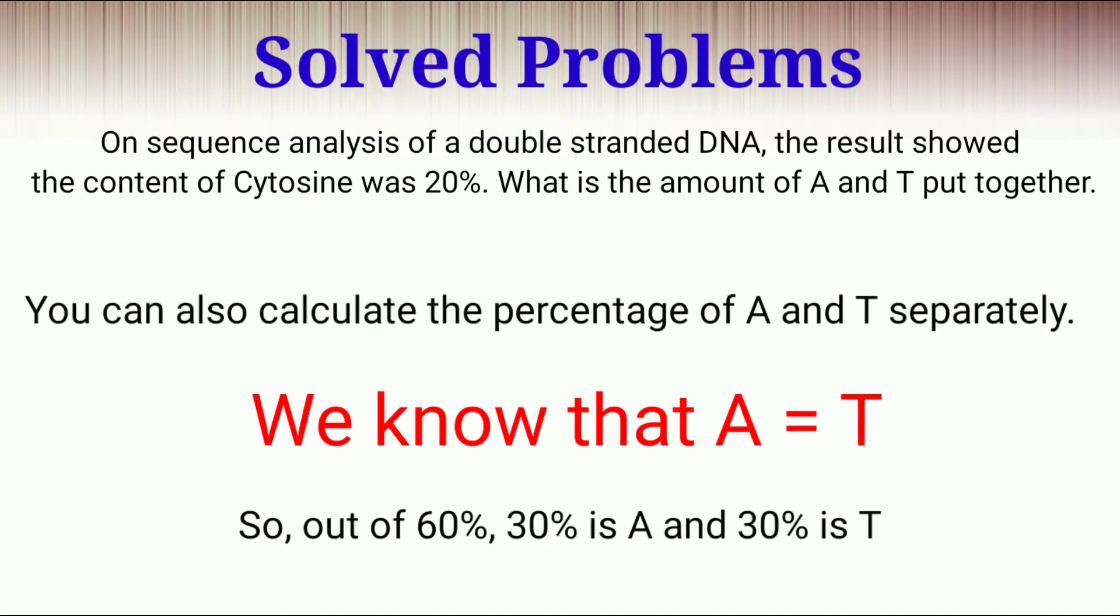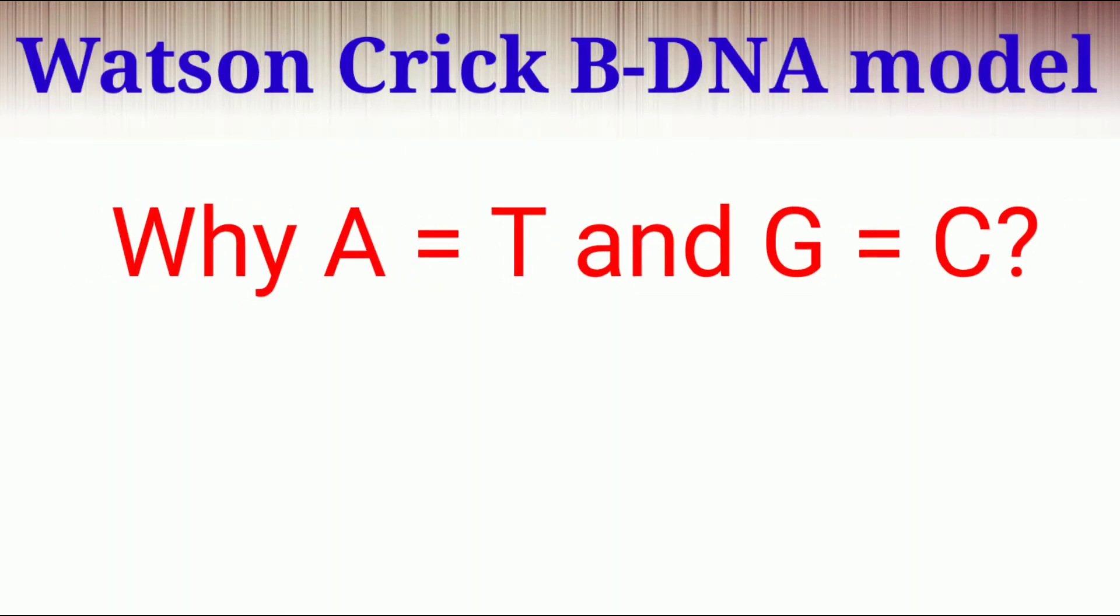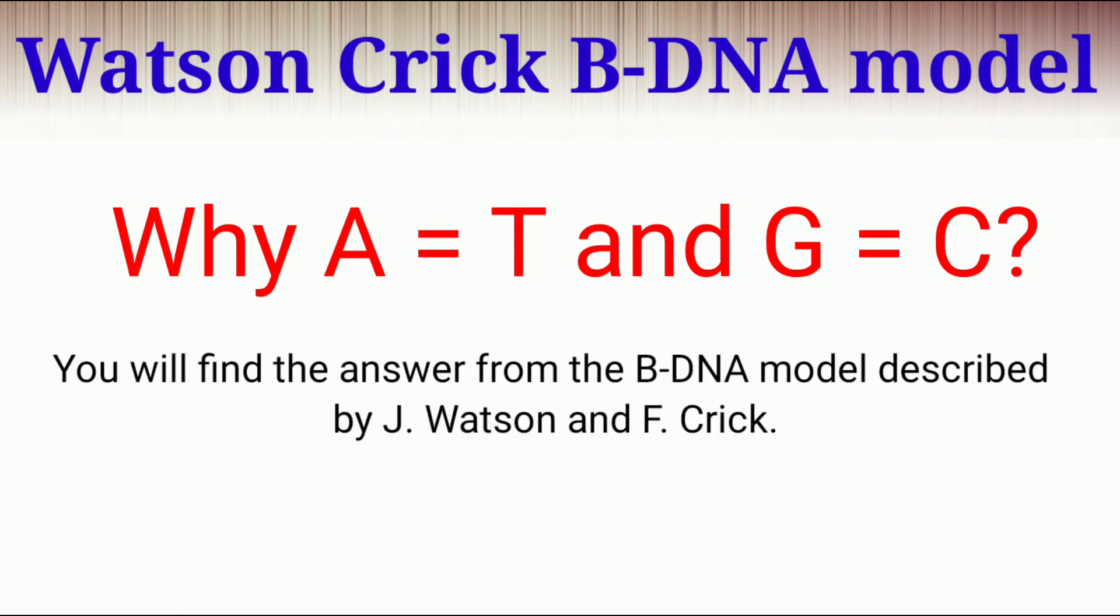You can also calculate the percentage of adenosine and thymine separately. We know that adenosine is always equals to the percentage of thymine. So 60 by 2 or 30% is adenosine and 30% is thymine present in this DNA. The question why adenosine always equals to thymine and guanosine always equals to cytosine was actually solved by James Watson and Francis Crick.